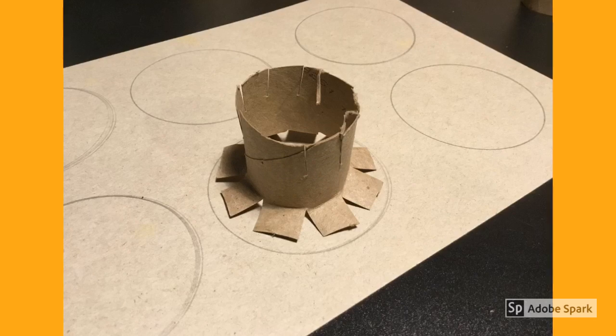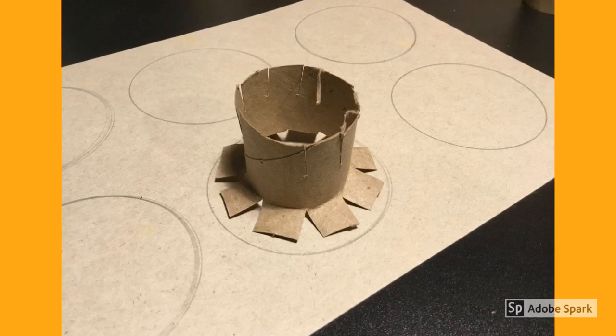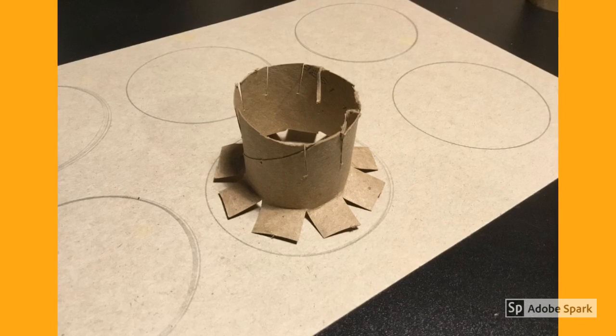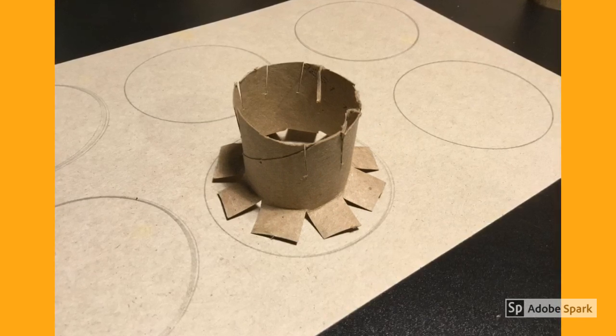Fold out the small tabs you just created on the small cylinders to create a flange connection. Place these on top of the circles you traced earlier to make sure they fit, and trim accordingly.